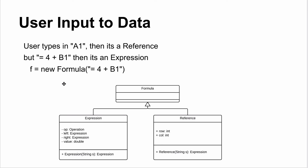Say the user types 'A1' in a cell — that's a reference to cell A1. But if the user types '=4+B1', that means add the number 4 to whatever is in cell B1 — that's an expression. So we have two types of formula: references and expressions. In code, you'd say 'f = new Formula()' and pass it a string; the constructor takes a string and parses it to create an instance.